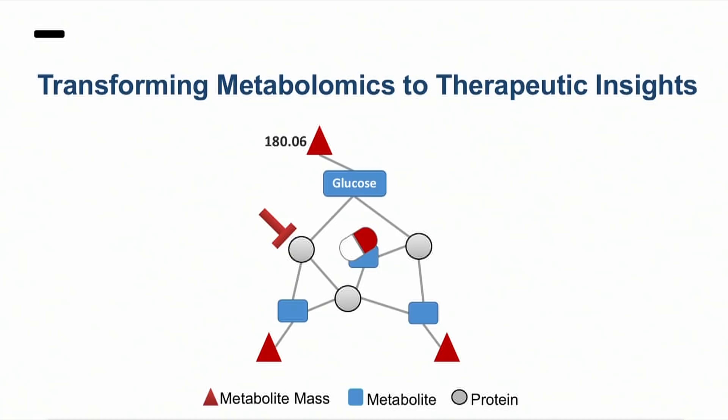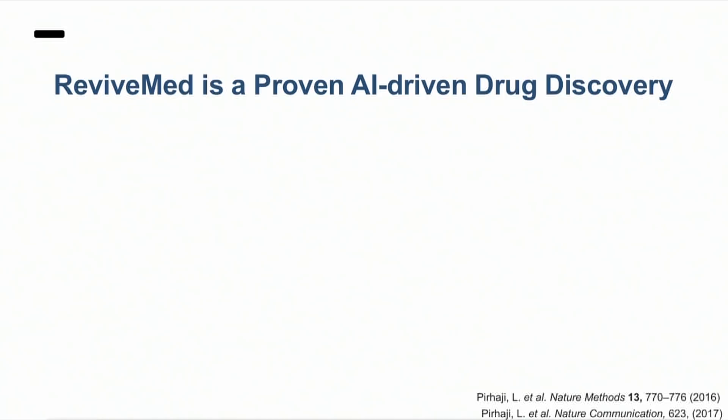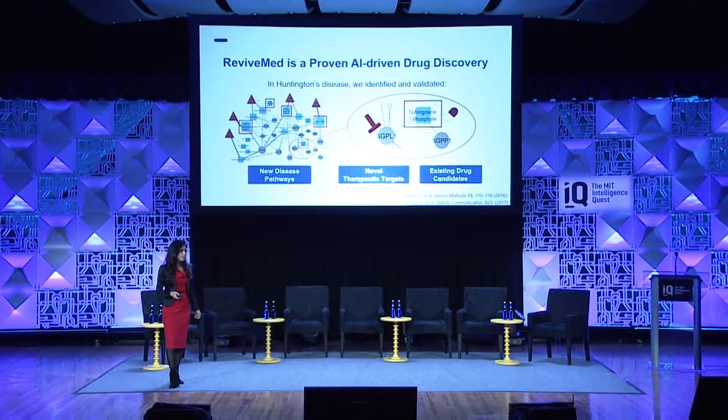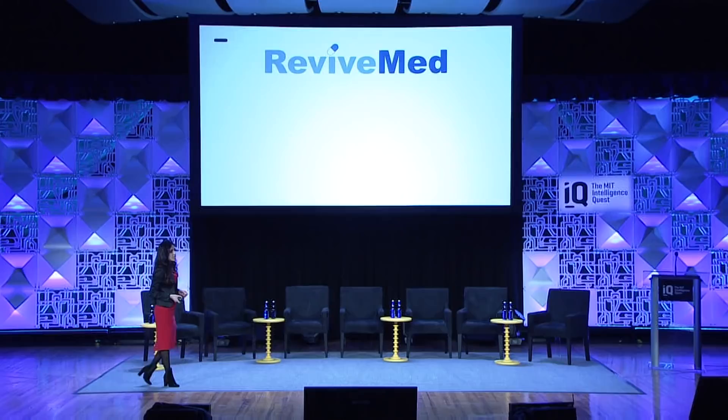Let me show you a real-case example. In Huntington's disease, which has no treatment, we were able to identify novel disease pathways, identify existing drugs with therapeutic effects for Huntington's disease, and identify novel therapeutic targets. This was work that we did at MIT and published in Nature Methods. We then founded ReviveMed, a startup company, to bring this technology to the market and create impact in people's lives.